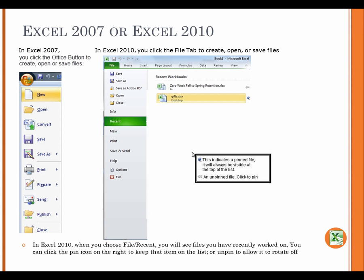In Excel 2010, when you choose File Recent, you will see files you have recently worked on. You can click the Pin icon on the right to keep that item on the list, or Unpin to allow it to rotate off.